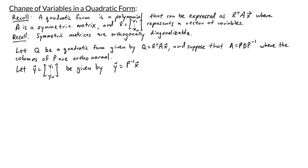Now since the columns of P are orthonormal, we can think of P inverse as P transpose. So here y can also be rewritten as P transpose times x.